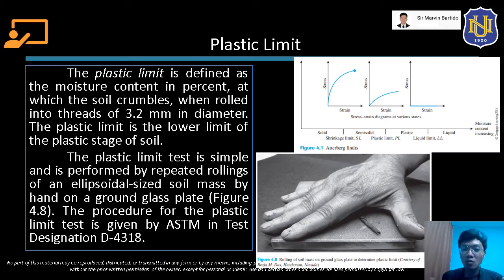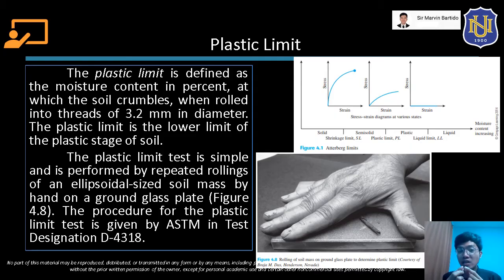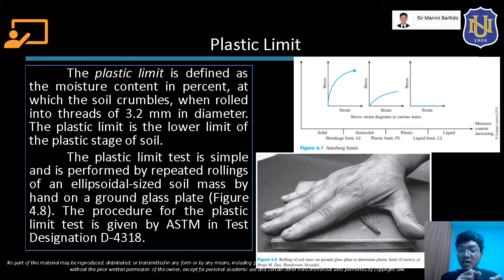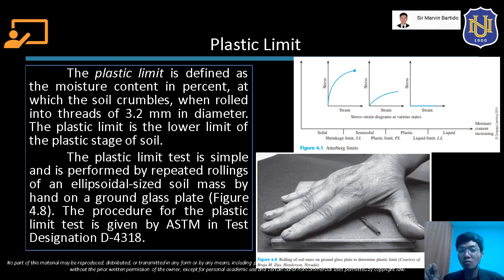Iro-roll natin yung elongated soil pat hanggang maging thread siya na yung diameter ay 3.2 mm. Dun sa may discussion natin sa experiment, we mentioned na 3 mm yun, pero yung exact talaga is 3.2 mm. Hanggat hindi siya nagka-crumble, kung baga naro-roll natin siya into a thread of 3.2 mm, ang gagawin natin doon, re-remold natin siya and then i-re-roll natin ulit hanggang maging thread ulit siya of 3.2 mm in diameter. Uulitin natin yung procedure na yun — we will re-mold it, we will re-roll it hanggang mag-crumble siya. The moment na mag-crumble siya, i-re-record natin yung moisture content or yung water content ng soil by that time na mag-crumble yung soil natin. Kasi yun yung magiging plastic limit natin.